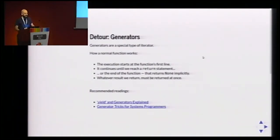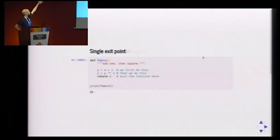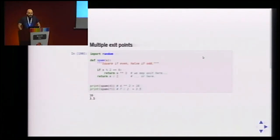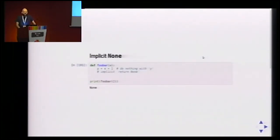Generators are a special type of iterator. A normal function starts, does stuff, and returns — whatever we return has to be done at once. For example, a simple function has exit points, and once we hit a return, we finish and never come back. If a function doesn't have a return, that's an implicit None — Python functions always return something.